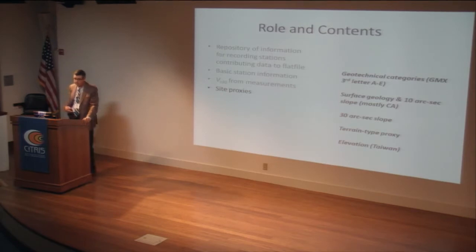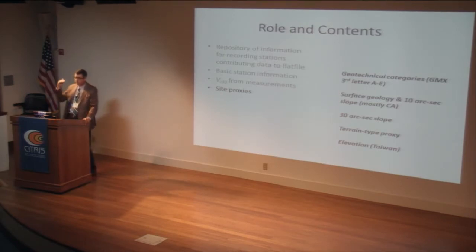There is also a terrain proxy — a category scheme with 19 categories describing different types of terrain, available worldwide, based on the same 30 arc-second digital elevation models that Dave Wald used. We have that for a number of areas — not every place around the world, but many. And we have elevations, because that's a proxy used in Taiwan.